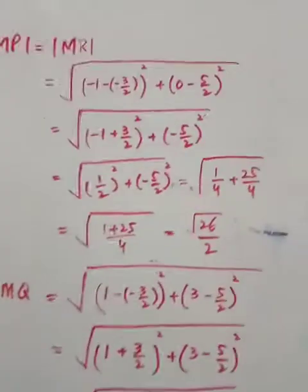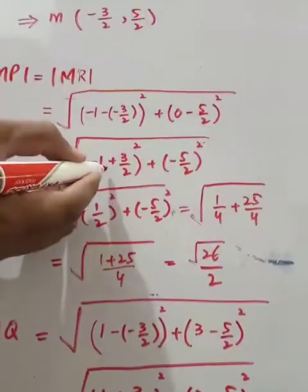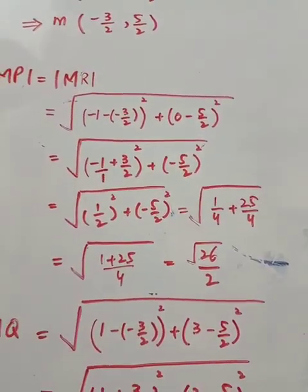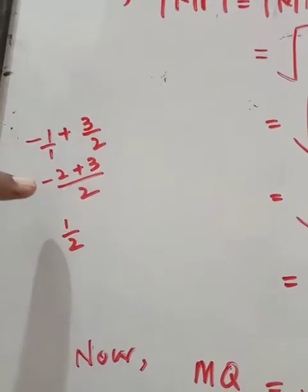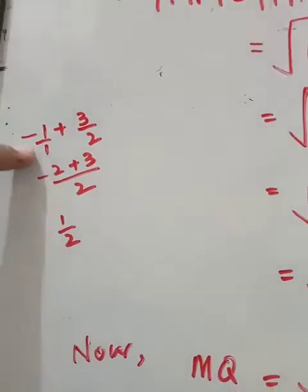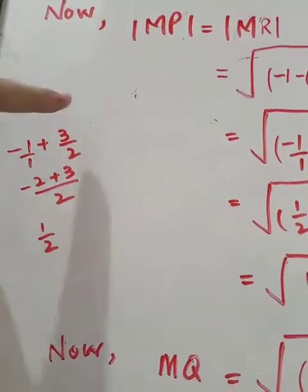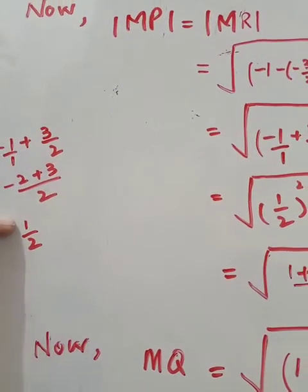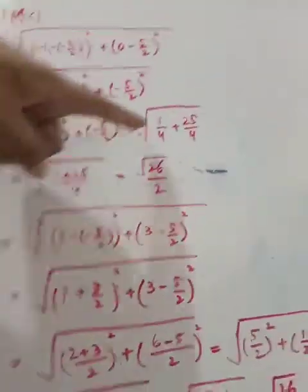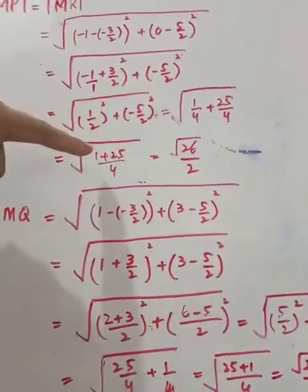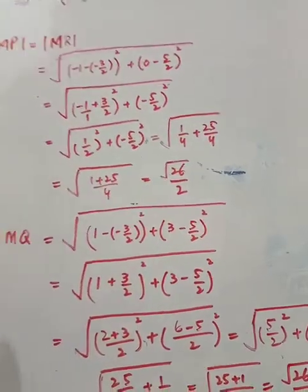Yeh step dekho: minus 1 plus 3 by 2 — iska LCM 2 aaya. 2 times minus 1 equals minus 2, plus 3 equals 1, so 1 by 2. Phir LCM liya to upar 26 ban gaya, neeche 4 ka under root aata hai 2. So MR = under root 26 by 2.